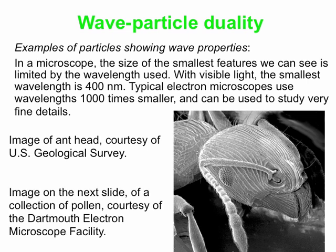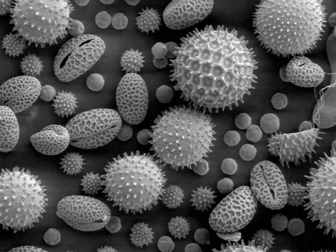Here's one other picture from the Dartmouth Electron Microscope Facility — this is a collection of pollen. When you see this, you'll see why people are allergic to pollen: it looks like horrible stuff, these spiky balls. You need an electron microscope to resolve the tiny details on these grains of pollen. So that is another example of wave-particle duality — electrons, things we normally think of as particles, acting as waves. That's our introduction to the de Broglie wavelength.